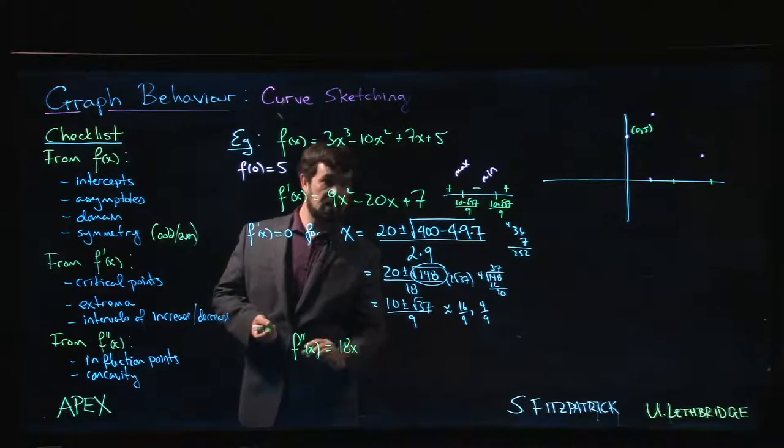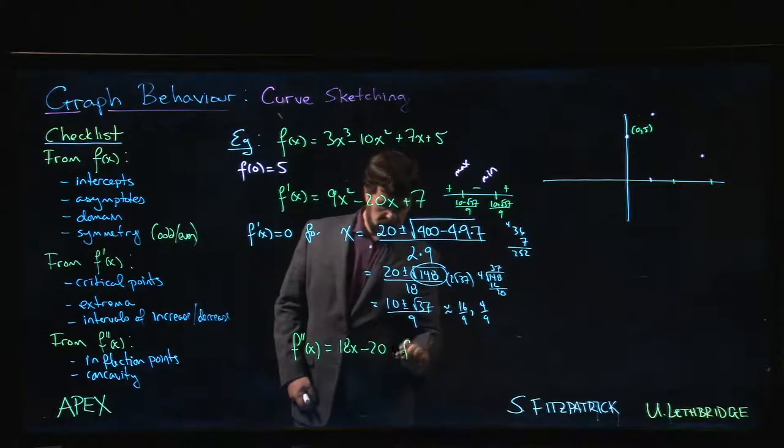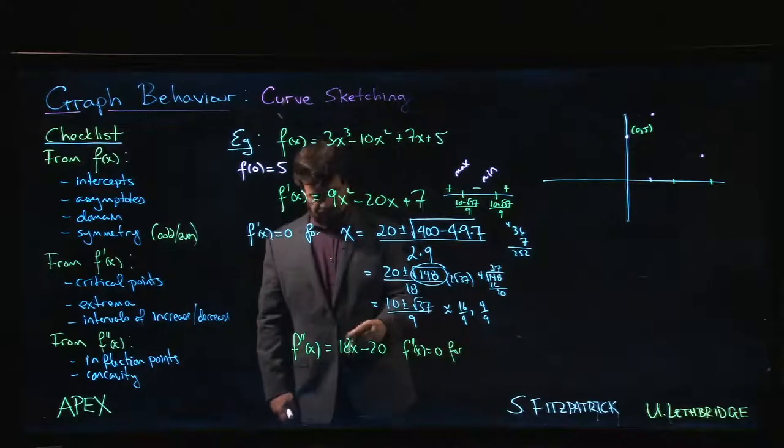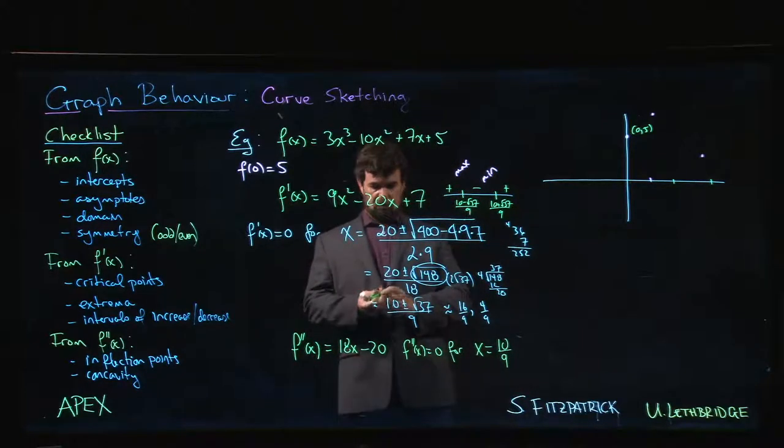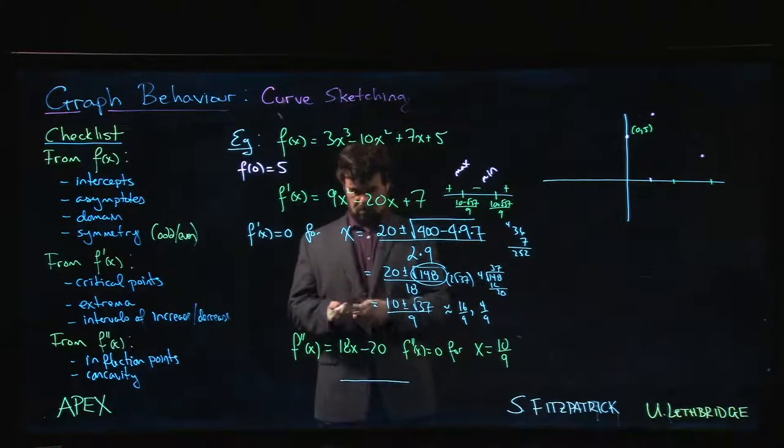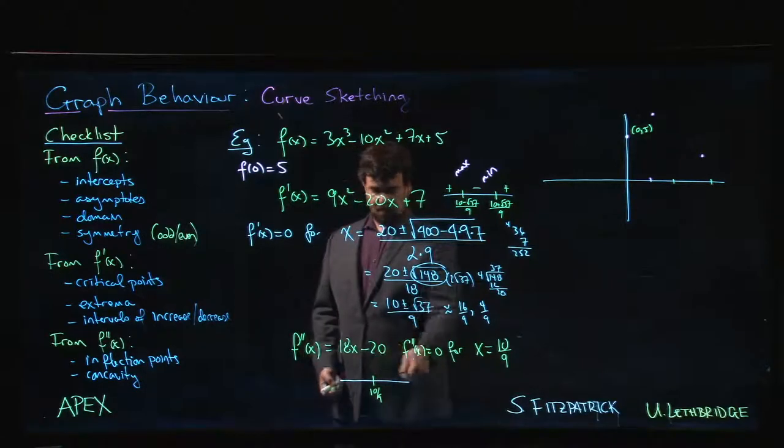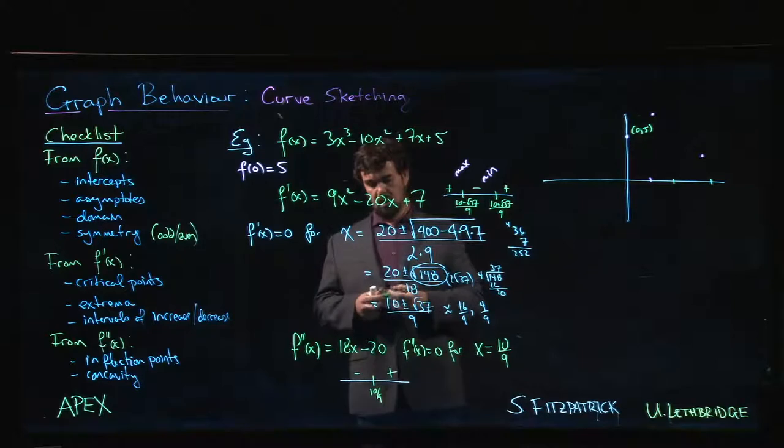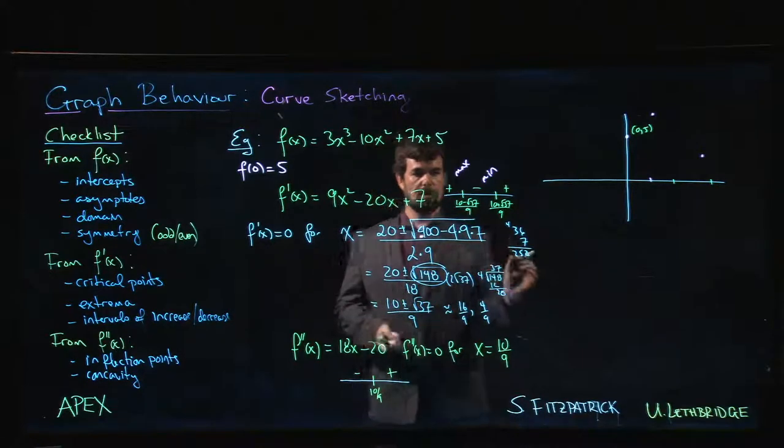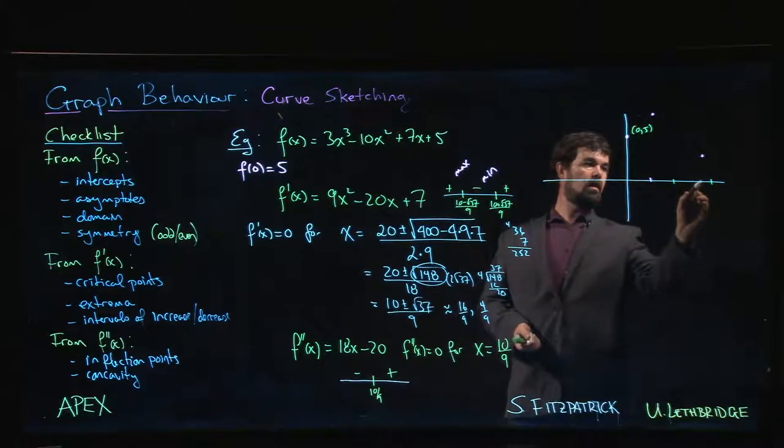Now we move on to the second derivative. f''(x) = 18x - 20. f''(x) = 0 for x equals 20 over 18, or 10 over 9, so a little bit bigger than 1. Looking at a number line for the second derivative, we've got an inflection point at 10 over 9. If x is bigger than 10 over 9, that's going to make this whole thing bigger, so we're going to have positive here and negative over there. You can do test values if you like.